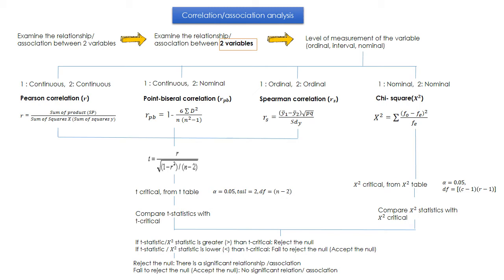If the variables are independent, there is no relationship. If they are dependent, there is a relationship — for example, in the selection of academic program between male and female. When determining which correlation or association analysis to use: first, identify your research question; next, identify what type of variables you have — nominal, continuous, or ordinal. All four methods — Pearson, point-biserial, Spearman, and chi-square — have different ways of computing R or chi-square.